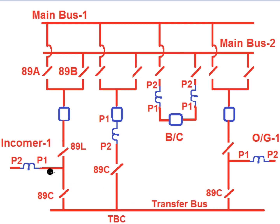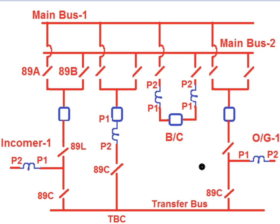Any feeder can be diverted via the TBC bay if maintenance is required for a circuit breaker. Either an incomer or an outgoing feeder can be diverted to the TBC bay. In this video I will discuss bus bar protection of the two main bus and one transfer bus system.